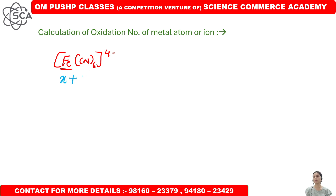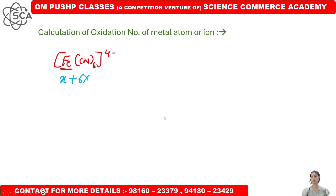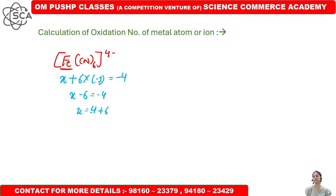Let's calculate the oxidation number. We have 6 CN ligands. The charge on cyanide is minus 1. The charge on the entity is minus 4. So: x + 6×(−1) = −4, which gives x − 6 = −4, so x = −4 + 6 = 2. That means the oxidation number of iron here is plus 2.